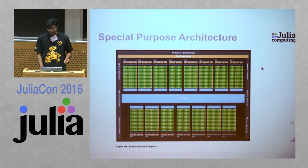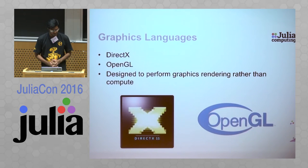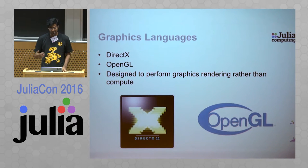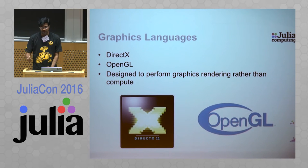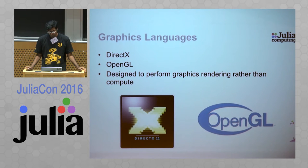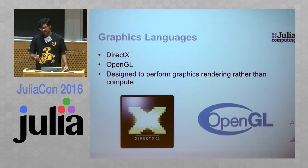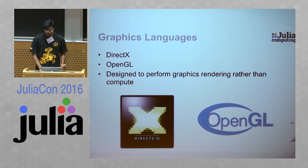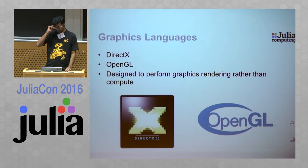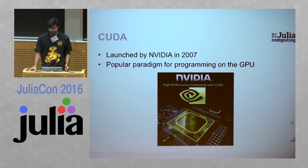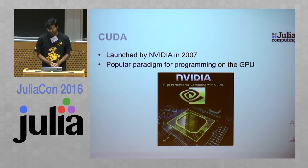Earlier, it wasn't easy to program on a GPU. You only had graphics languages like DirectX and OpenGL, which are intended for rendering graphics rather than performing scientific computation, and they have their own entire pipeline. Even if you did want to perform computations through a graphics language, you needed expertise in graphics programming. But in 2007, NVIDIA launched CUDA, which was meant to remove this problem altogether, and it soon became a popular paradigm for programming on the GPU.